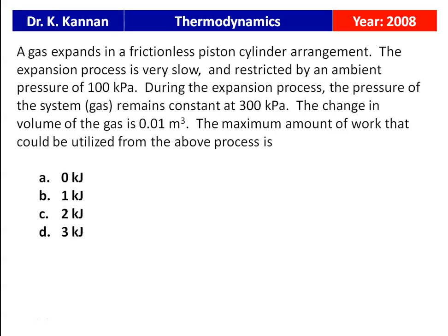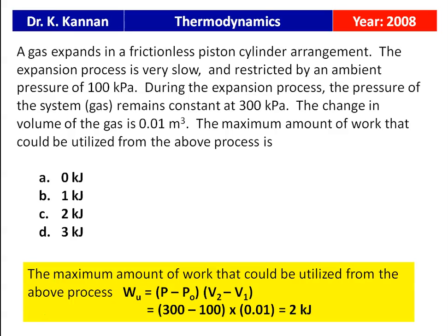From the 2008 question paper: gas expands in a frictionless piston-cylinder; ambient pressure is 100 kPa, system pressure is constant at 300 kPa, change in volume is 0.01 m³. Maximum useful work = (P − P₀) × ΔV = (300 − 100) × 0.01 = 2 kJ. The answer is 2 kJ, option C.